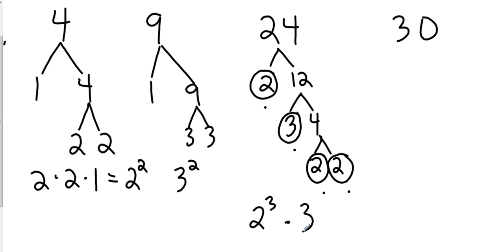Okay, let's look at thirty. Thirty is going to be two times fifteen. Two is a prime number, so I'm going to circle it. Fifteen is going to be three times five. There's my prime factorization there. So that's going to be two times three times five.